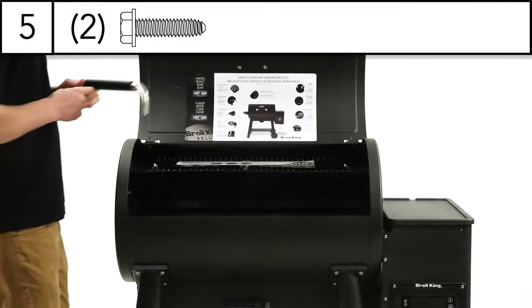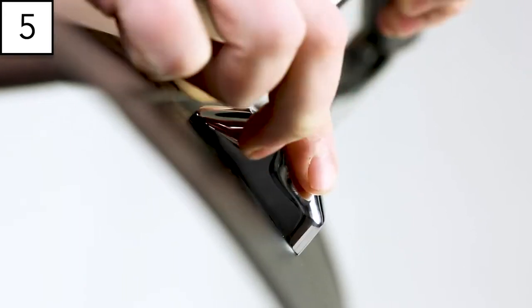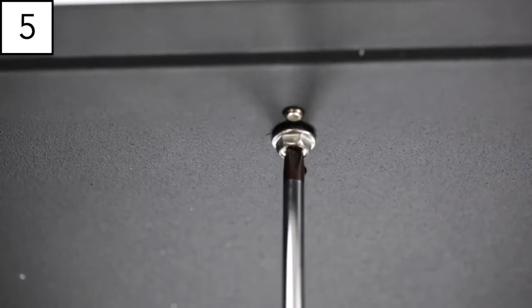Step 5. Attach the lid handle to your smoker. First, set the handle seats on the lid. The large side of the wedge is always on top of the handle. Tighten each screw with your screwdriver.